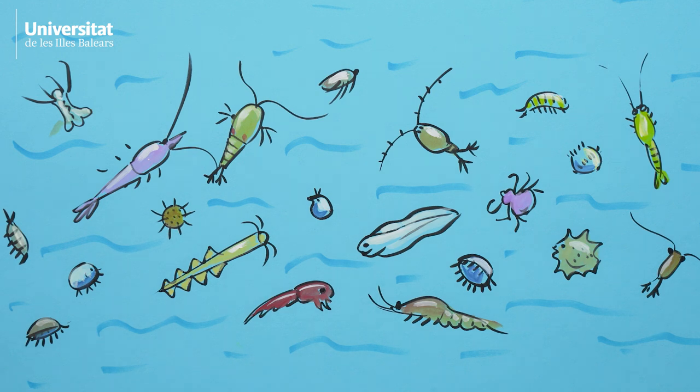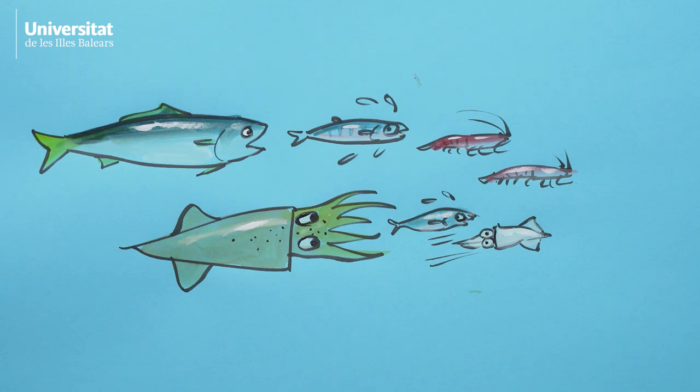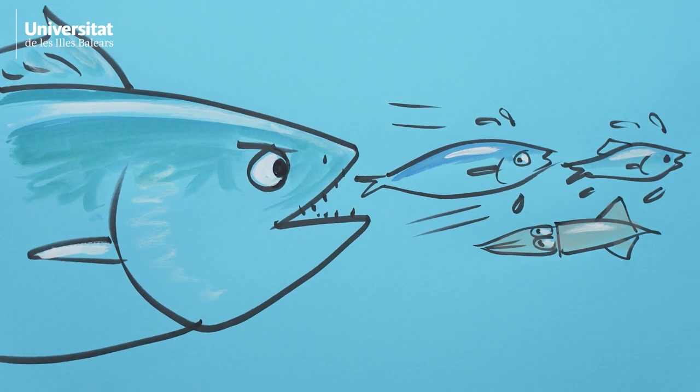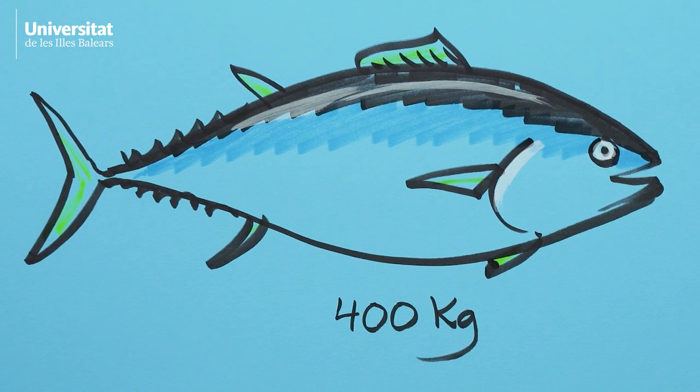The zooplankton, in turn, becomes lunch for fish larvae and other mini-animals, which, in turn, are food for fish and crustaceans and cephalopods, which are the favorite prey of larger fishes, until we're back at the tuna and the rest of the top predators.